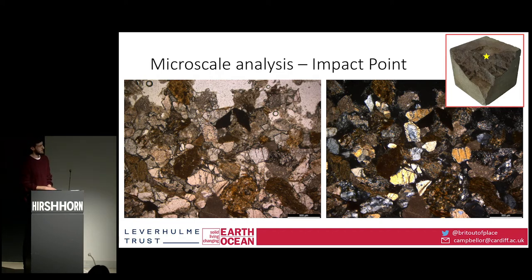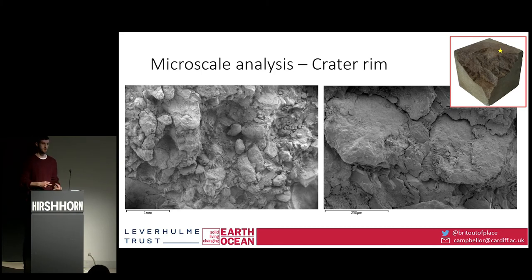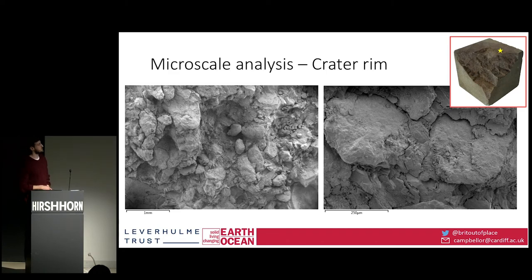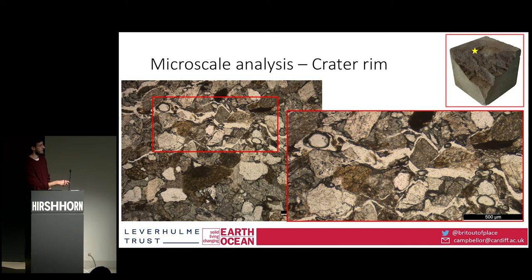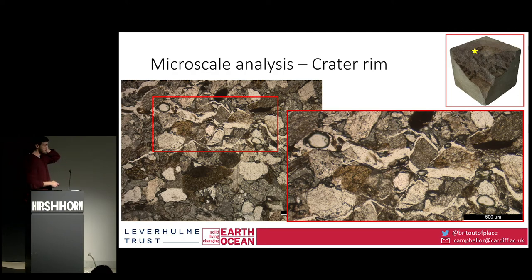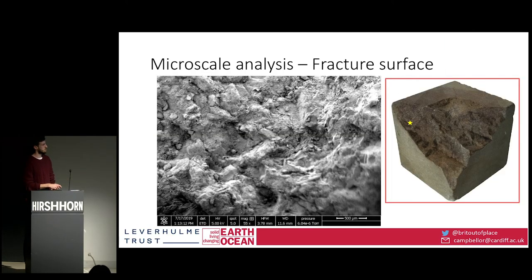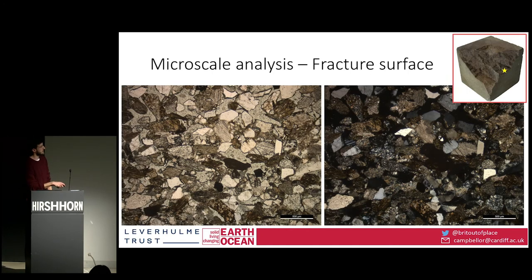Moving slightly further away to the edge of the initial crater rim, we see a preference for fracturing along the boundary between our constituent grains and the matrix, which results in plucking behavior, with fewer transgranular fractures. Moving further away still to a fracture surface, in thin section we see fractures going around grains rather than through them — though they will cross a grain if it's too large to avoid. At the most distal fracture surface, the grains and matrix are quite intact and damage is essentially localized to the fracture plane, with no deformation away from it.